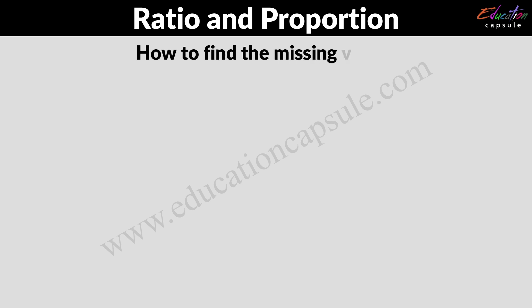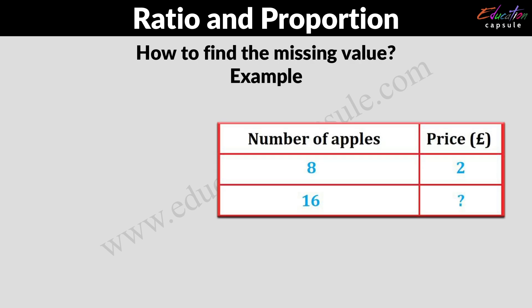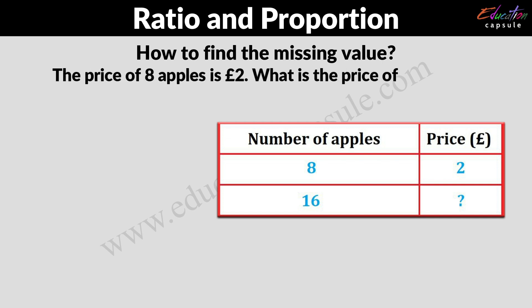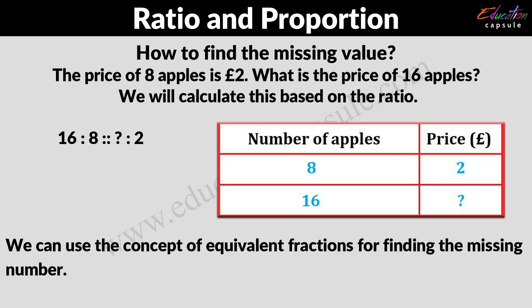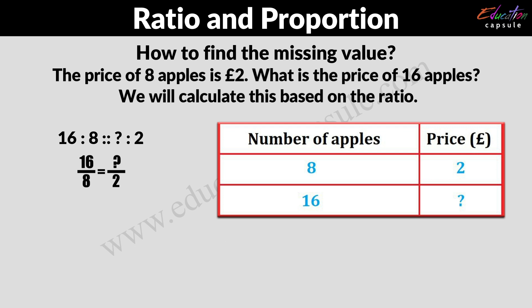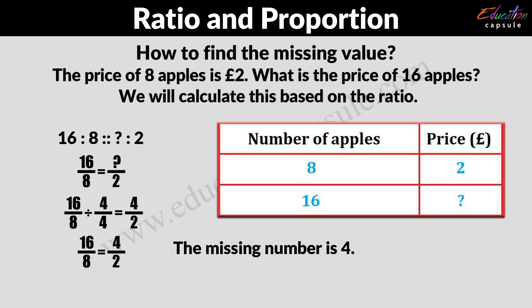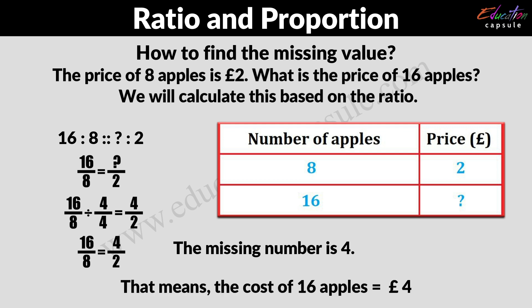Now how to find missing values? Let's learn with an example. The price of 8 apples is 2 pounds. What is the price of 16 apples? We will calculate this based on the ratio. As you can see this table, we can say that 16 ratio 8 is proportional to something ratio 2. So we can use the concept of equivalent fractions: 16 out of 8 is equal to something out of 2. We'll divide both the numerator and denominator of 16 out of 8 by 4, and we get 4 halves. So the missing number is 4, meaning the cost of 16 apples would be 4 pounds.